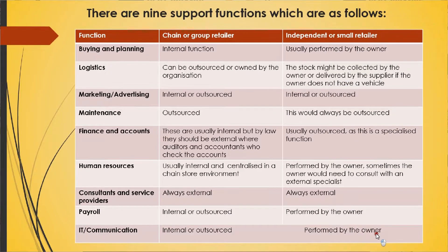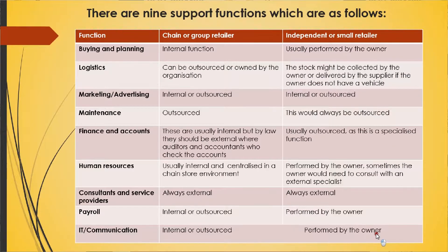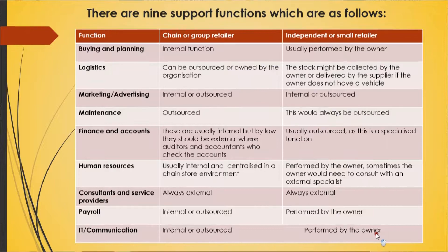We are going to look at whether each function is performed internally — meaning within the borders of the business — or outsourced, which is externally provided by an external individual that the business pays to perform that particular service. The first function is buying and planning. The buying department at the head office in a chain environment finds new suppliers, decides what lines to take on, and negotiates prices at national level. Planners then decide which branch keeps which products and in what quantity. In a chain or group retailer, this is performed internally. In an independent or small retailer, this is usually performed by the owner.